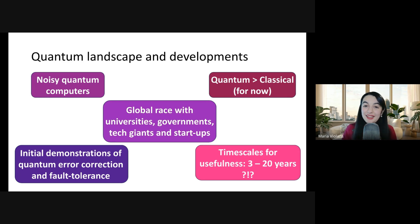At the moment, there's a global race to try and implement the first useful applications on a quantum computer, which includes universities, academic labs, governments, tech giants, and startups. Lots of different parts of the quantum ecosystem all trying to contribute to building quantum computing as soon as possible.